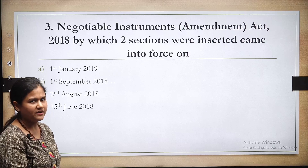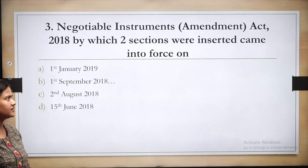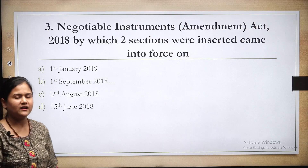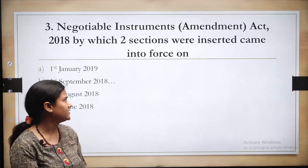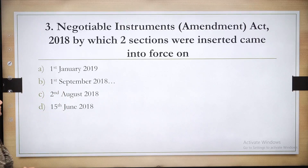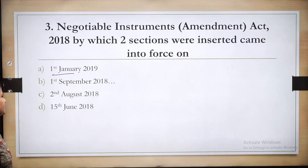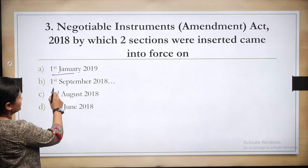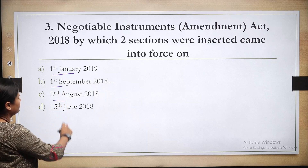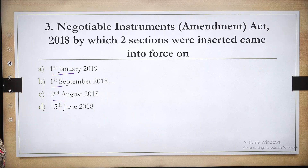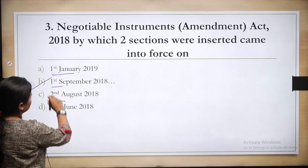Third question: The Negotiable Instrument Amendment Act 2018, by which two sections were inserted, came into force on which date? Option A: 1st January 2019. Option B: 1st September 2018. Option C: 2nd August 2018. Option D: 15th June 2018. The correct answer is 1st September 2018.